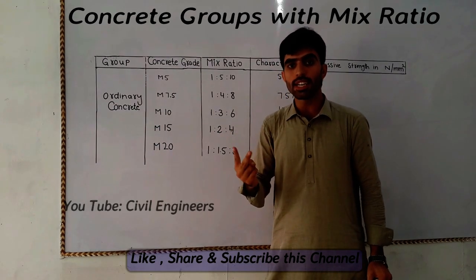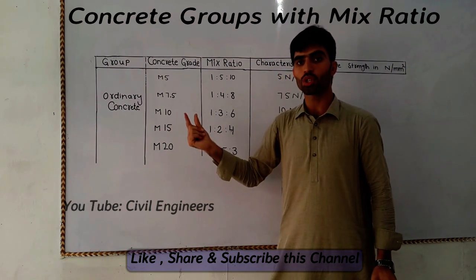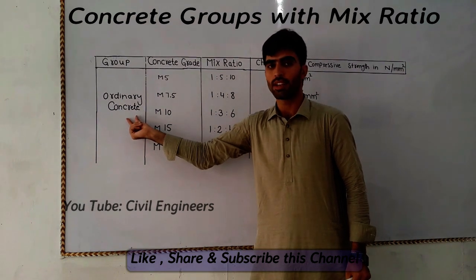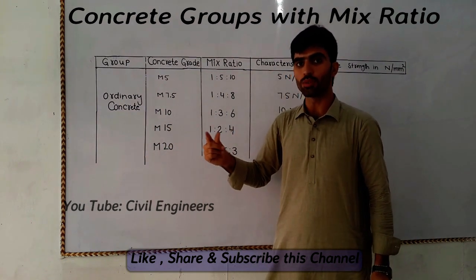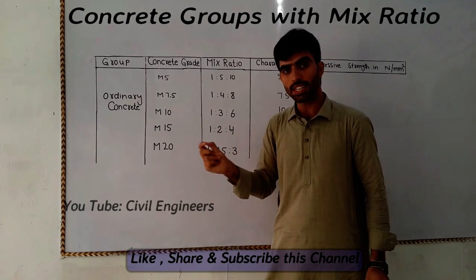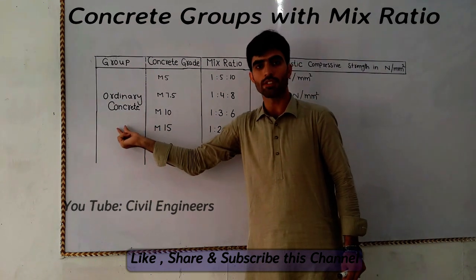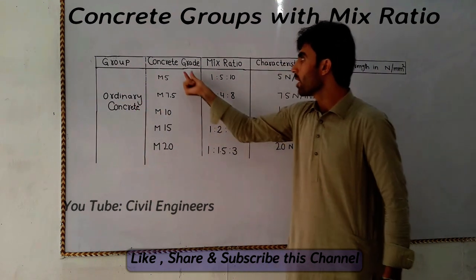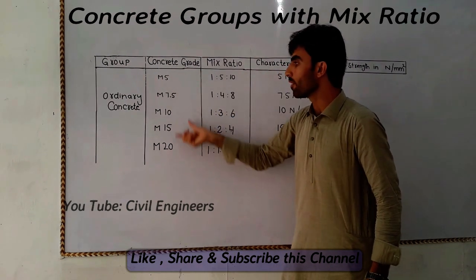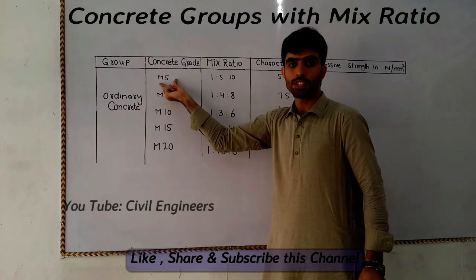the second one is standard concrete, and the third one is high strength concrete. In this video I am showing you the first group, ordinary concrete. In a second video I will teach you standard concrete and high strength concrete. Concrete grades from M5 to M20 are ordinary concrete.